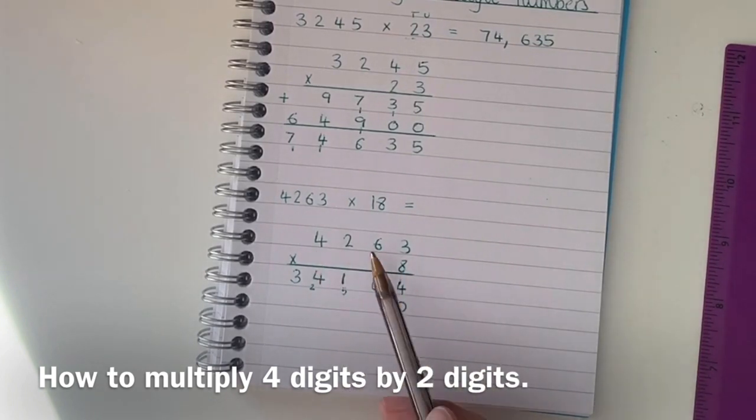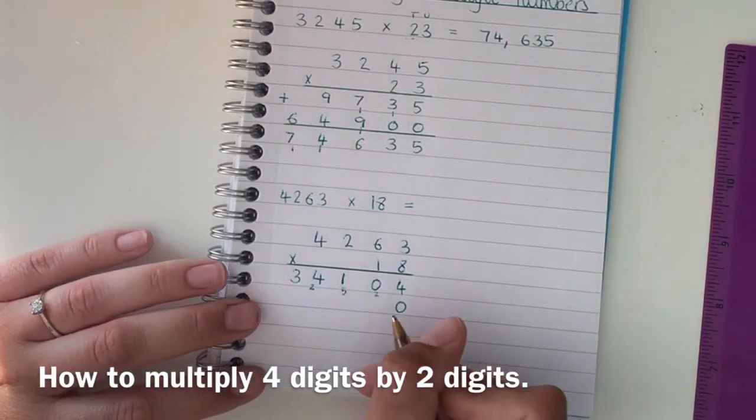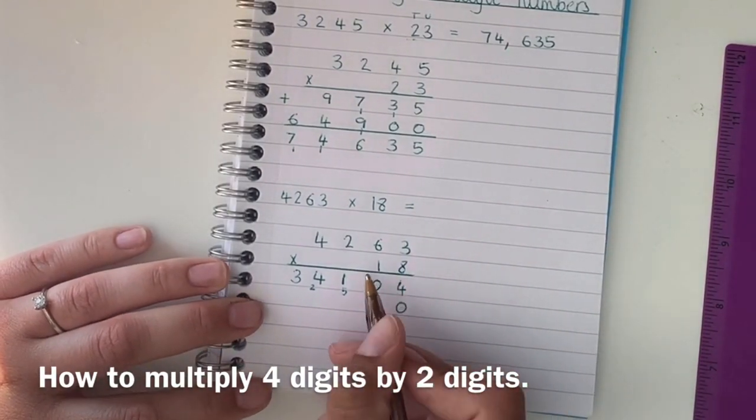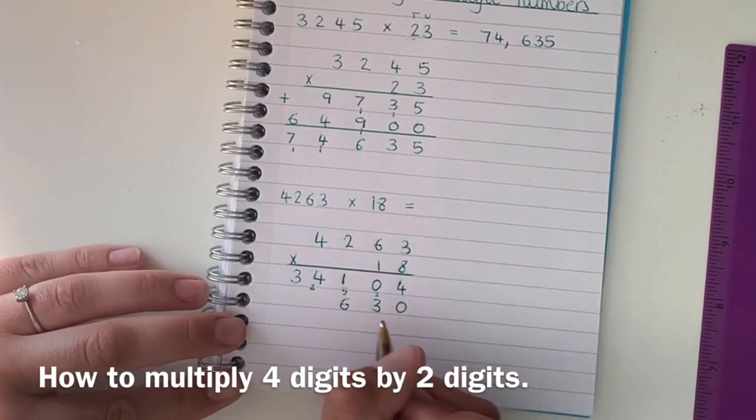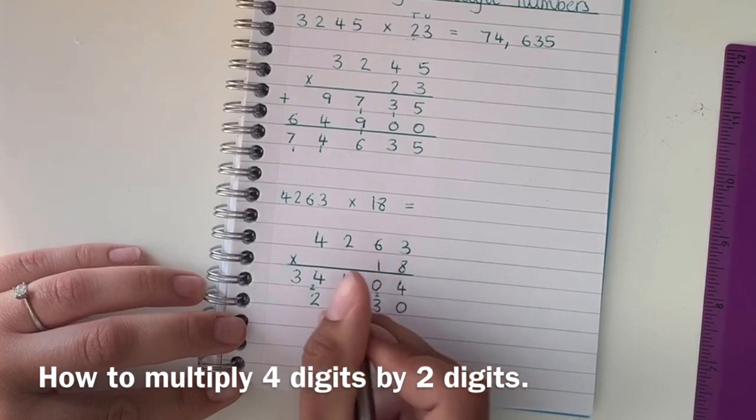Now we need to multiply 4,263 by 10. But we've already put my 0 down so it does make it a little bit easier and we're going to start with 1 times 3, 1 times 6, 1 times 2, 1 times 4.